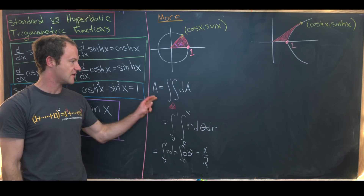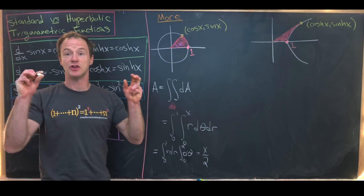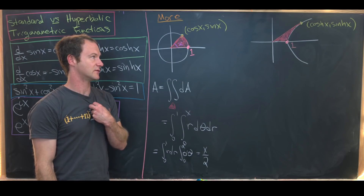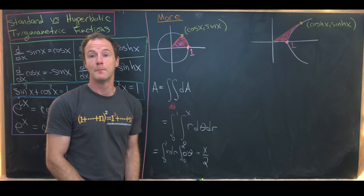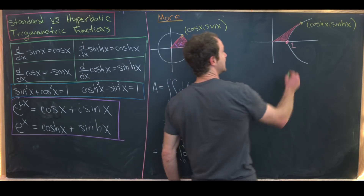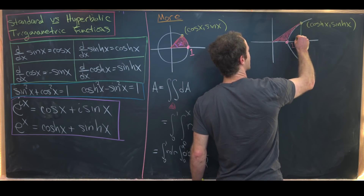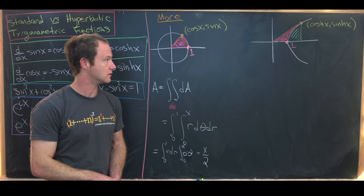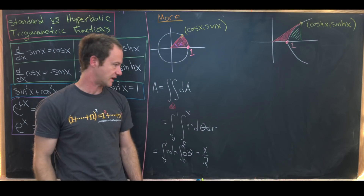Now I want to compare that area with a similar area for a unit hyperbola, which can be similarly parametrized with hyperbolic cosine and hyperbolic sine. This area is a little trickier to find. What we'll do is first extend to the area of an entire triangle, then subtract the area of that green region.